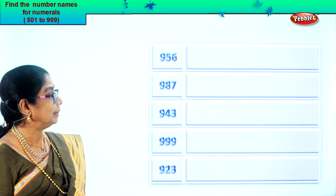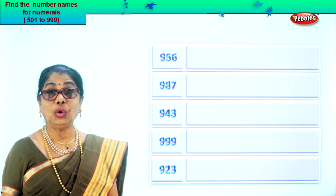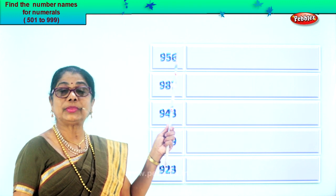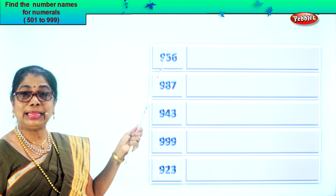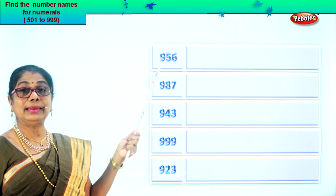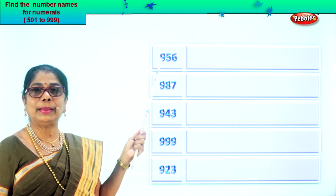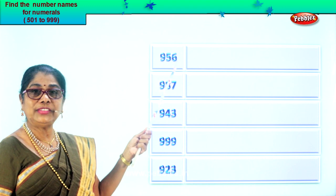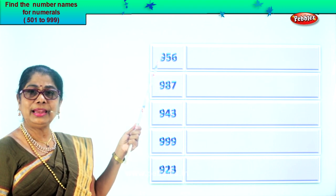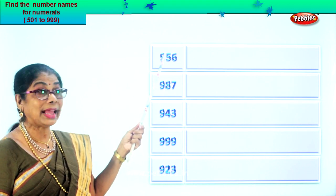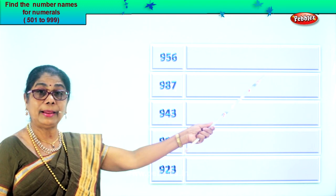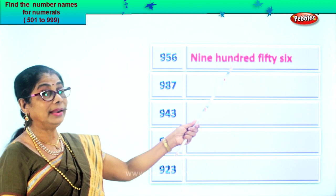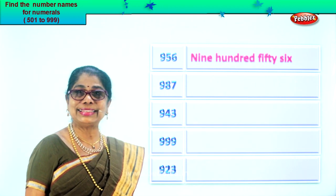I hope you enjoyed writing the number names for all these numerals. Let's get on to another exercise. See what you have here — only nine hundreds. You have nine, five, six. Six in the ones place, five in the tens and nine in the hundreds place. Read the number: nine hundred fifty-six. So first we write nine hundred, then we write fifty-six. Nine hundred fifty-six. Good.